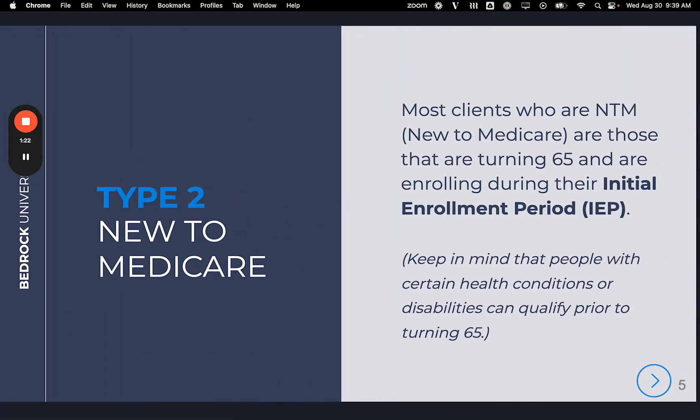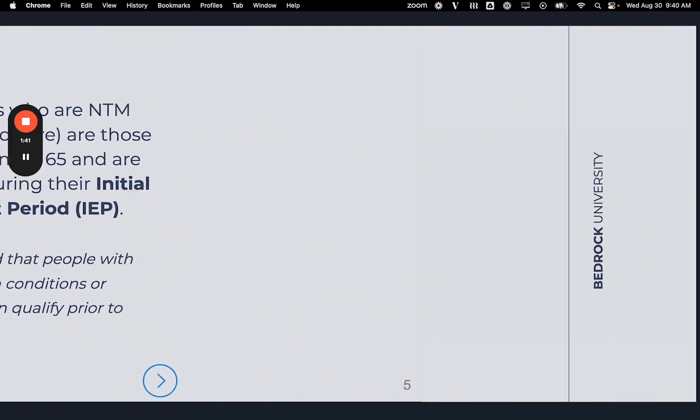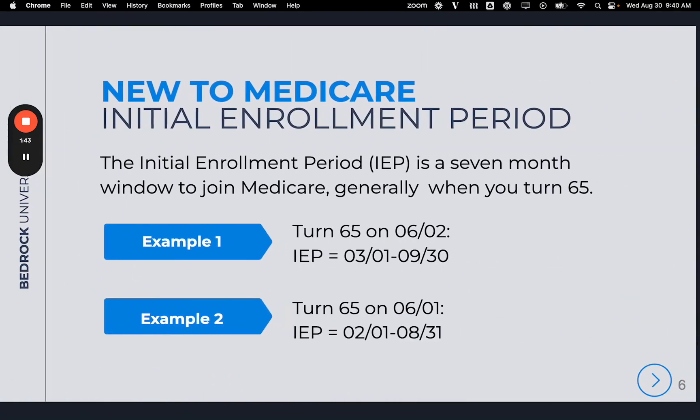Type 2: New to Medicare. Most clients who are NTM, or new to Medicare, are those turning 65 and enrolling in their Initial Enrollment Period, or IEP. Keep in mind that people with certain health conditions or disabilities can qualify prior to turning 65. The Initial Enrollment Period is a 7-month window to join Medicare, generally when you turn 65.